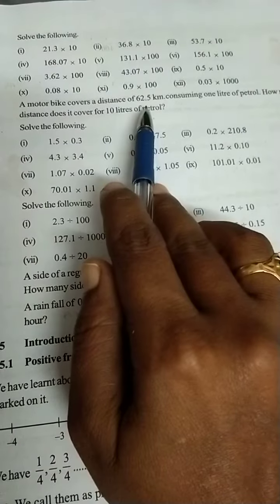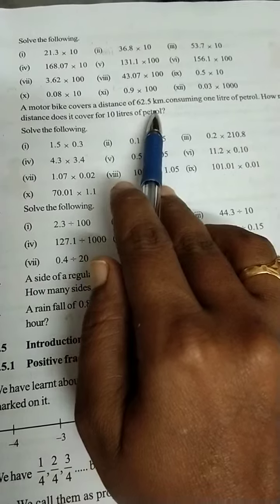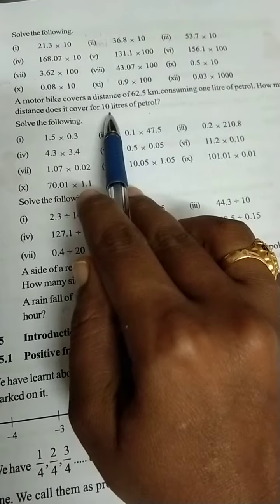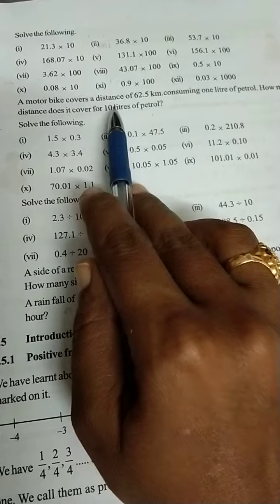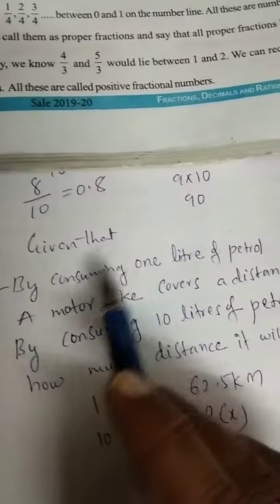Here one motorbike covers a distance of 62.5 km by using 1 litre of petrol. By using 10 litres of petrol, how much distance it will cover? We need to find out. See here, given that I wrote.